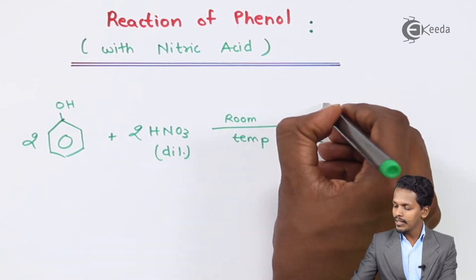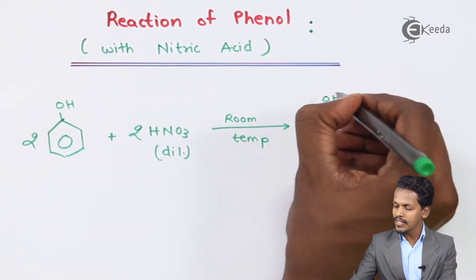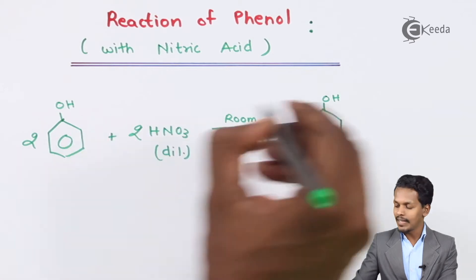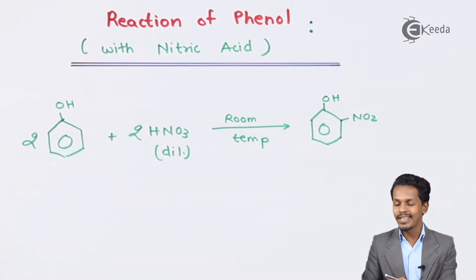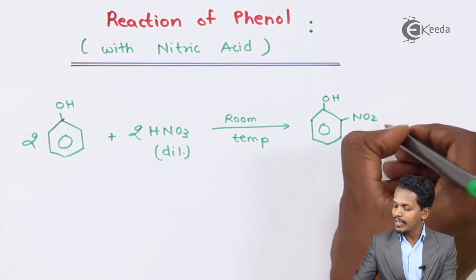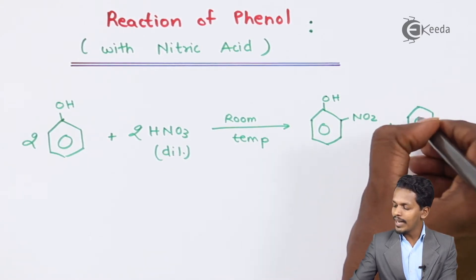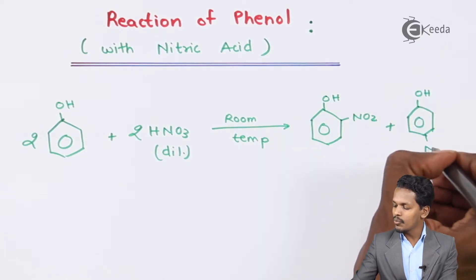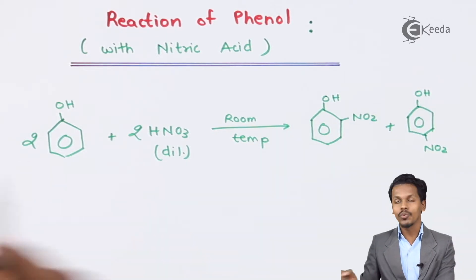There is a substitution reaction where the OH group remains as it is, while a hydrogen on the benzene ring is replaced by an NO2 group — this is known as a nitration reaction. We get two products: one where NO2 is at the ortho position, and another where NO2 is at the para position with respect to the OH group.